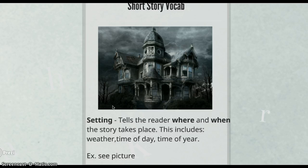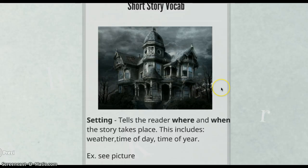The next element is setting, which tells the reader where and when the story takes place. It's important to note that this includes things like weather, time of day, and time of year. The example here is a picture of a creepy run-down house, which is actually the setting of another short story we're going to read, also by Edgar Allan Poe, called The Fall of the House of Usher.